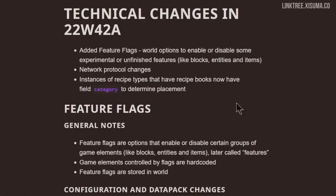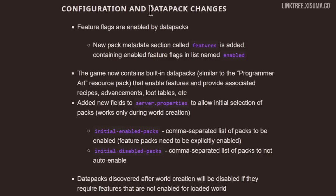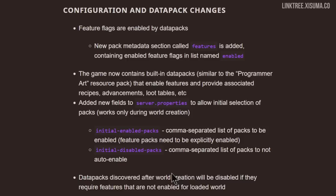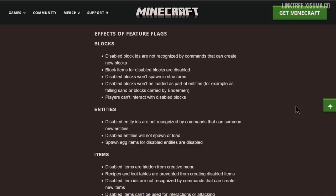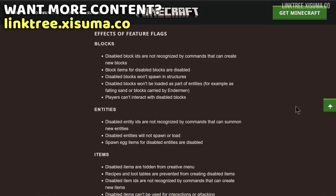When it comes to technical changes, there's a whole new system called feature flags — this is the way the game communicates what data packs are being used inside of a world. If you want to use these experimental packs on a server there are now some options in the server settings file. Data packs discovered after world creation will be disabled if they require features that are not enabled for the loaded world. This article is linked in the description box below.